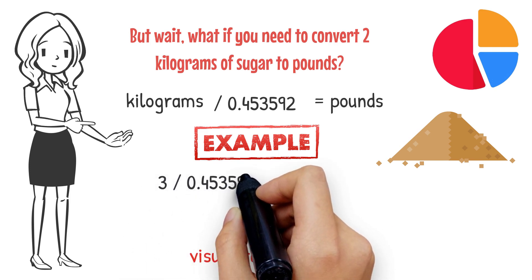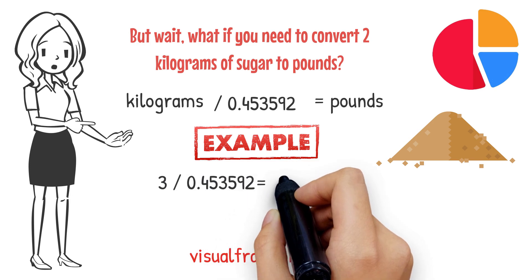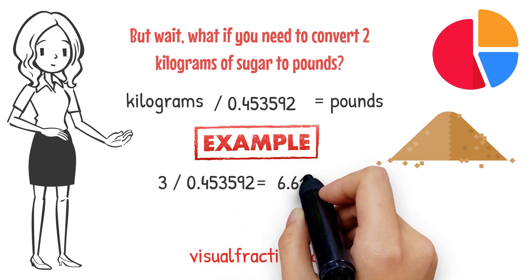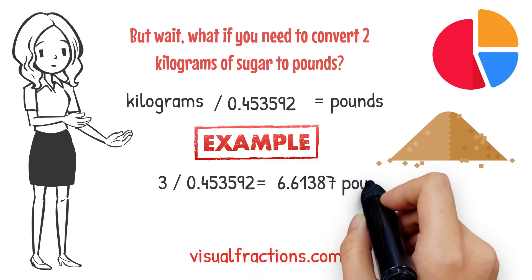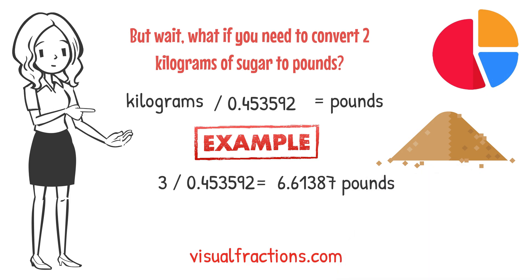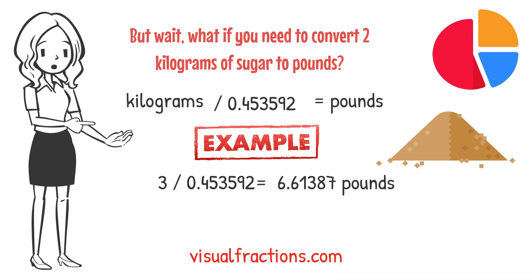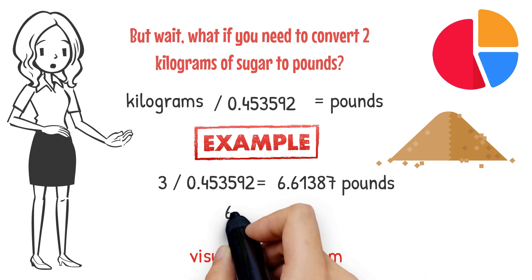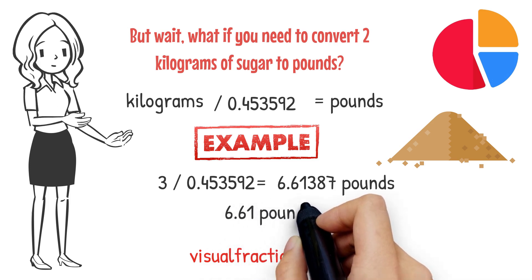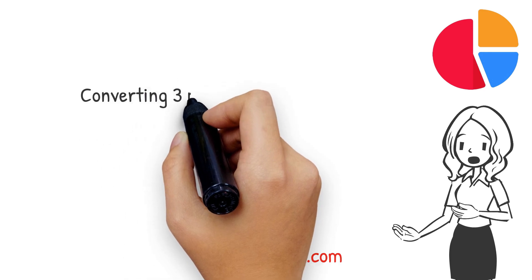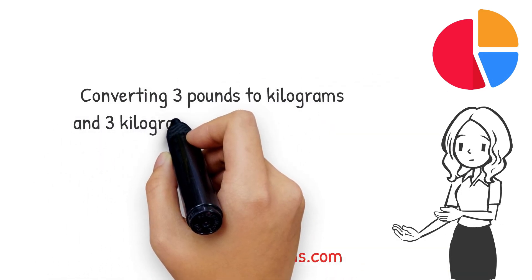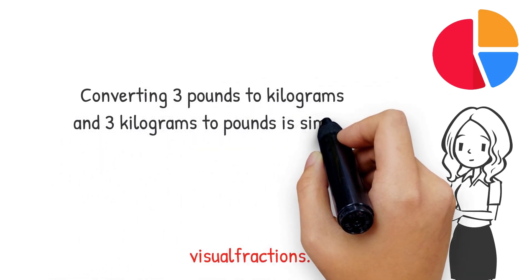We start by dividing three by 0.453592. This gives us approximately 6.6139 pounds. Remember to round this number to the nearest hundredth, so our final answer is approximately 6.61 pounds. And there you have it — converting three pounds to kilograms and three kilograms to pounds is simple once you understand the conversion factor.